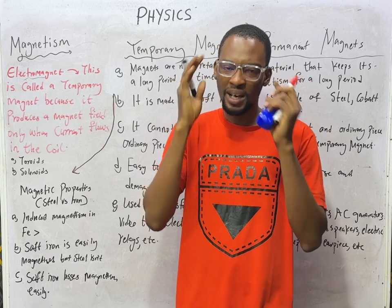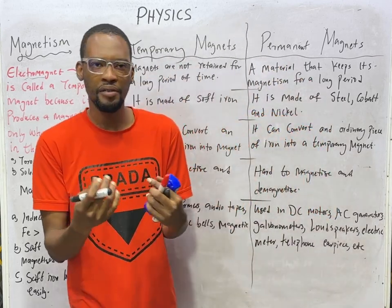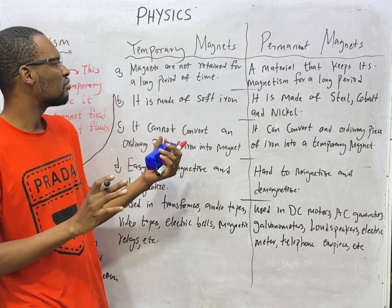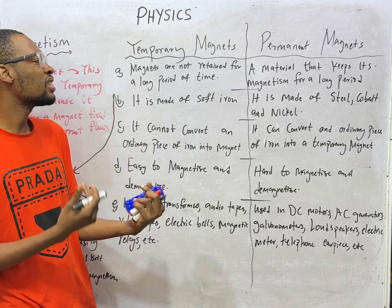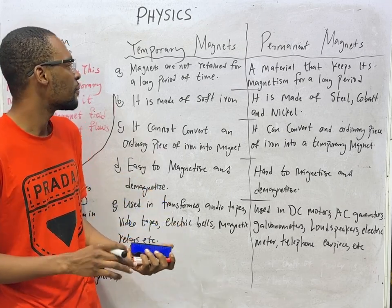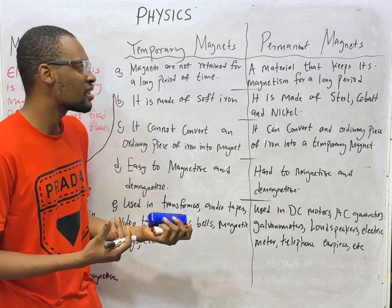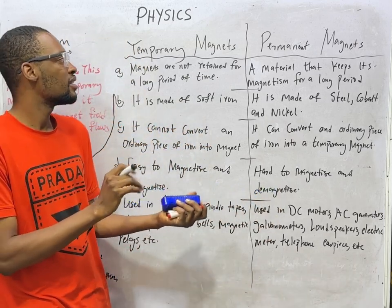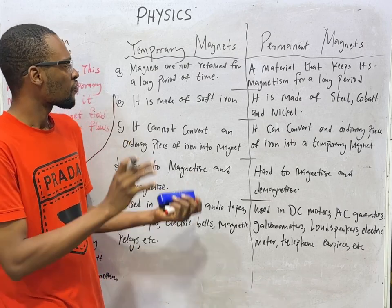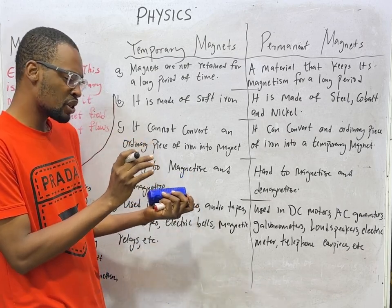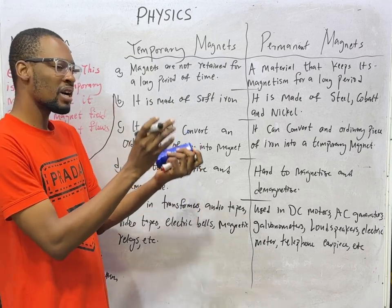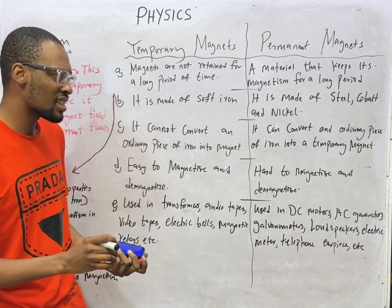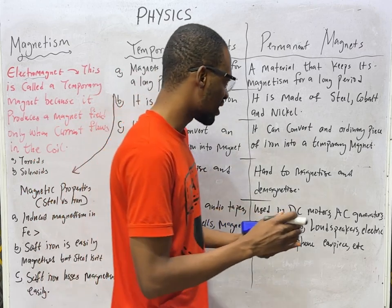Temporary magnets are magnets that don't retain their magnetism for a long period of time. Meanwhile, a permanent magnet is any material that keeps its magnetism for a long period of time. Temporary magnets are made up of soft iron. Meanwhile, permanent magnets are made up of steel, cobalt, and nickel.